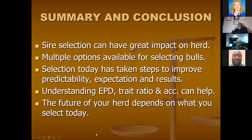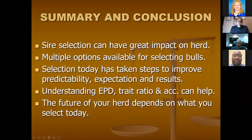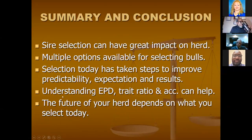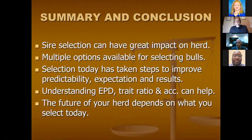In summary, sire selection can have a great impact on the herd. One bull will impact 25 cows. We have multiple options available to select bulls. Selection today has taken steps to improve predictability, expectations, and results — though we're paying more money for these bulls now. Understanding EPDs, trait ratios, and accuracy can help with selection of bulls. Remember: the future of your herd depends on what you select for today.